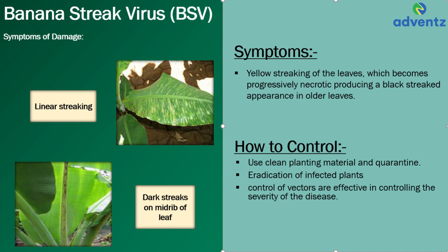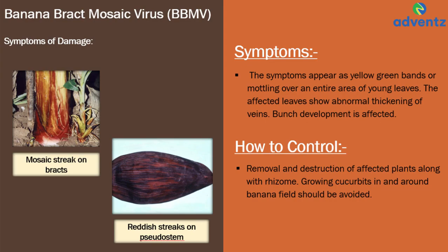The next disease is Banana Bract Mosaic Virus. Symptoms appear as yellow-green bands or mottling over an entire area of a young leaf. The affected leaves show abnormal thickening of veins, and bunch development is also affected. We can see mosaic streak on the bracts and reddish streaks on the pseudostem. To control Banana Bract Mosaic Virus: remove and destroy affected plants along with the rhizome. Growing cucurbits in and around banana fields should also be avoided.